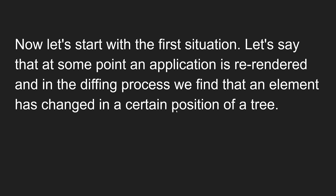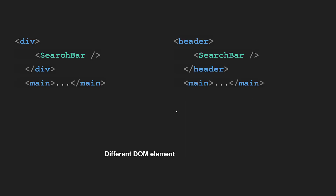Let's start with the first situation — different elements at the same position. At the same position, when the application is re-rendered and in the diffing process we find that an element has changed, for example here at the top we have a div element containing a search bar component. This div element has been changed to a header element — so only the div has changed to header.